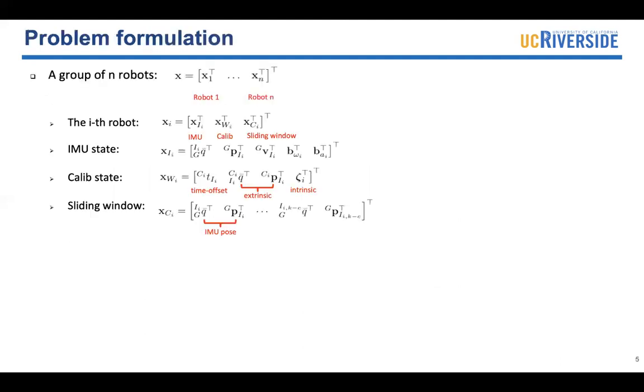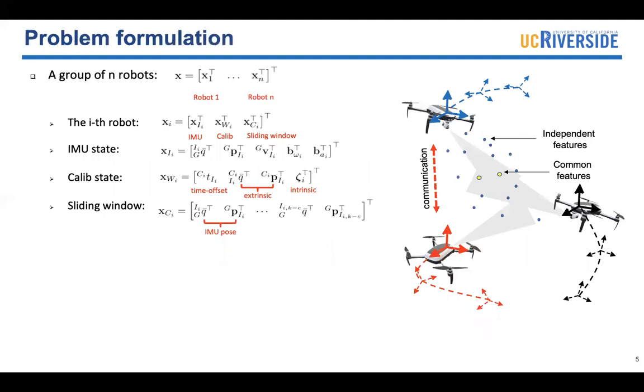Consider a group of n robots. For any robot i, the estimating state includes IMU state, the calibration parameters, and a sliding window. The sliding window consists of cloned IMU poses. We assume each robot can communicate with other robots, but we do not require all the robots can communicate with each other.